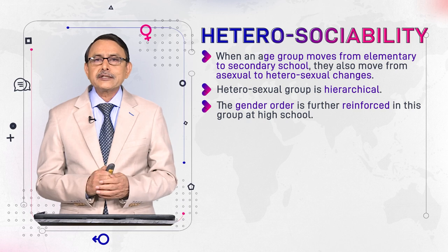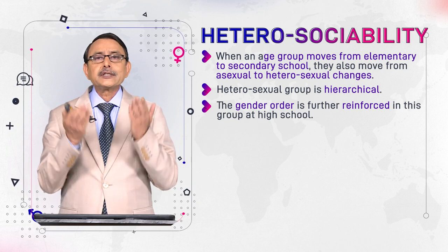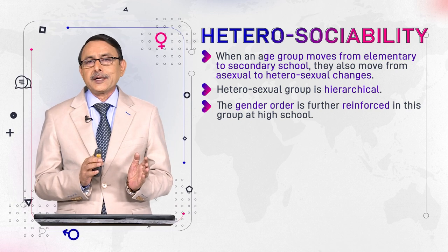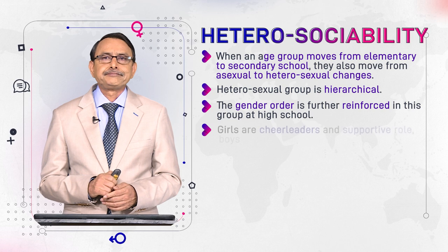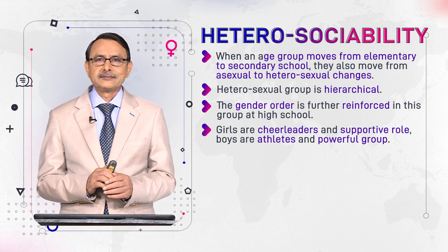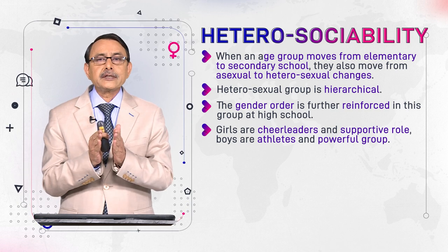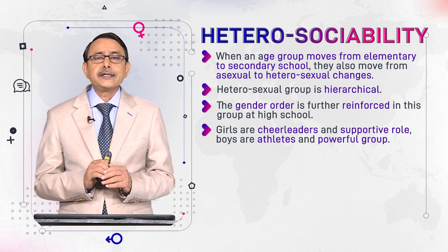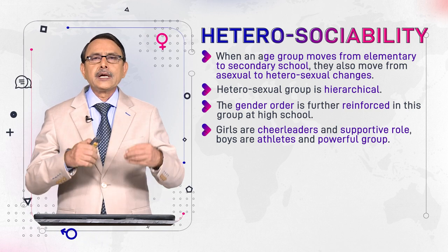Gender order means the norms and expectations — society expects that this hierarchy should be maintained to keep society functional. This is the gender order that promotes it, and gender order is promoted and conveyed thoroughly at school during adolescence. Everything that happens in school creates gender difference, and interestingly, the responsibility of this gender enforcement is given to the adolescents themselves.